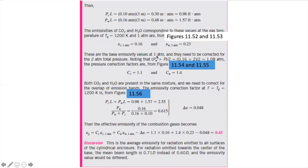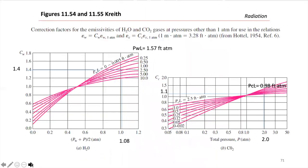Since we want the emissivity at two atmospheres — not one atmosphere — we need to apply pressure correction factors using Figures 11-54 and 11-55. To read Figure 11-54 for the water pressure correction, we need the product of the partial pressure of water times the total pressure, divided by two. That product equals 1.08 atmospheres.